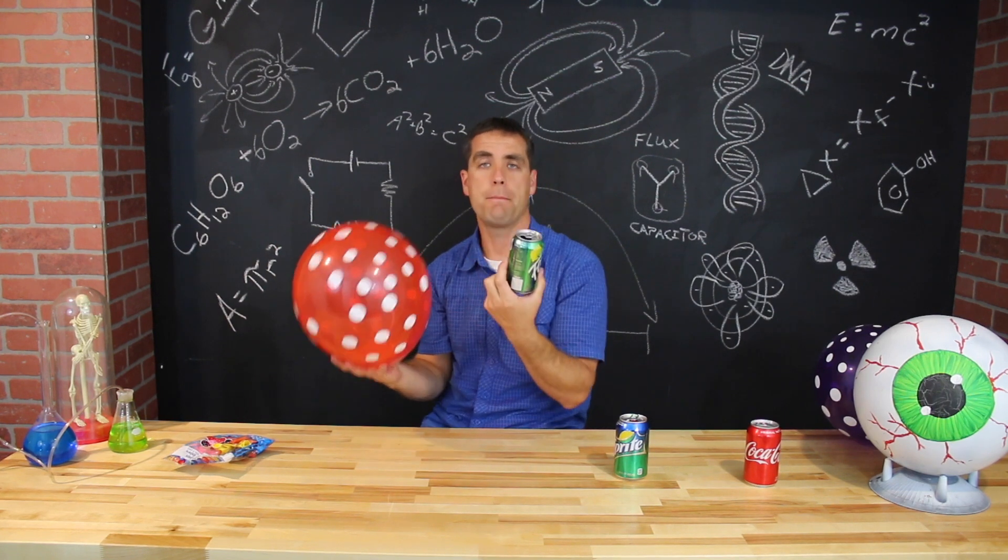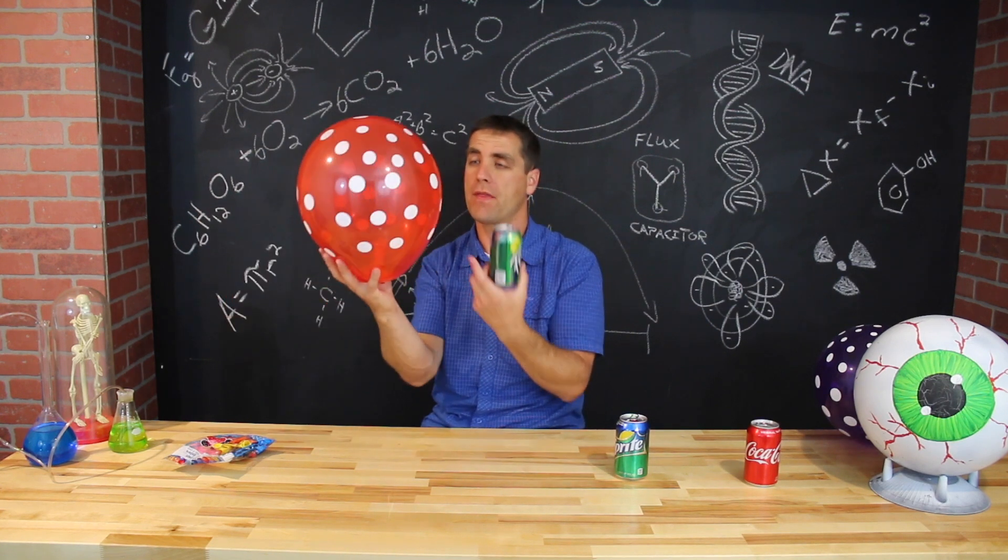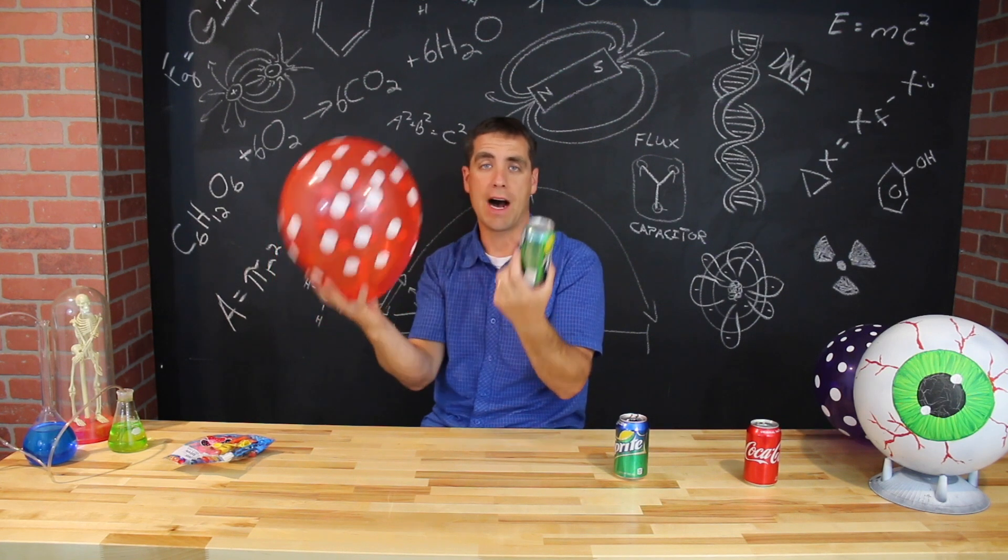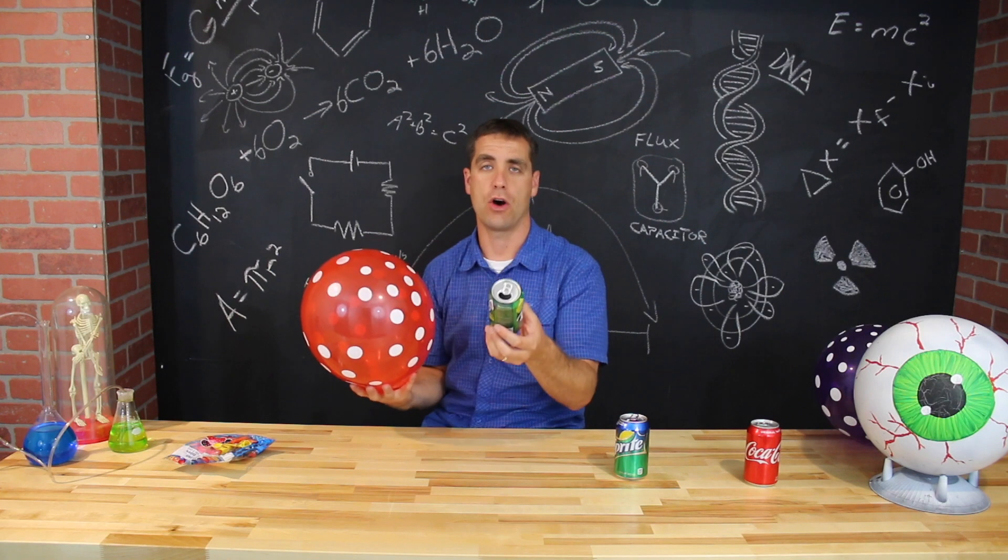So negative doesn't like negative, positive doesn't like positive, but the negatives from the balloon do like the positives from the can. Opposites attract, and that's how we're able to pull the can along.